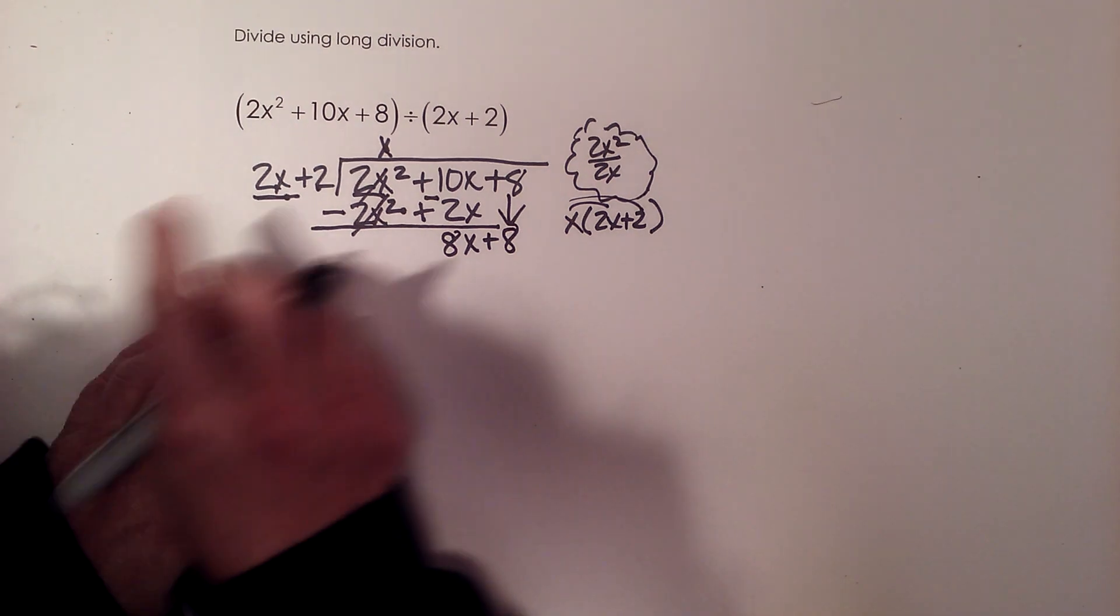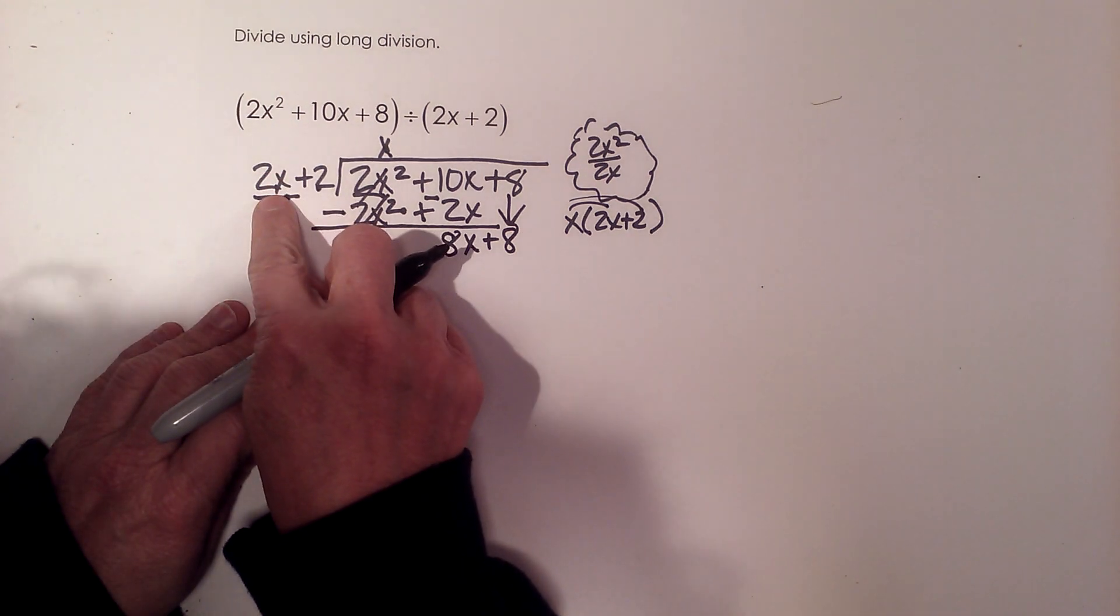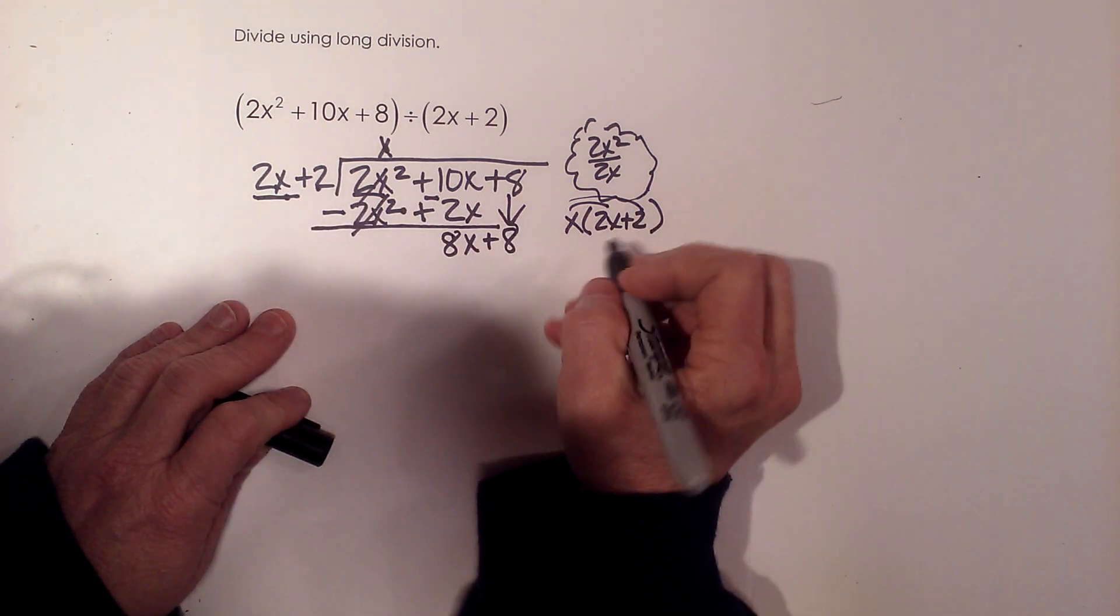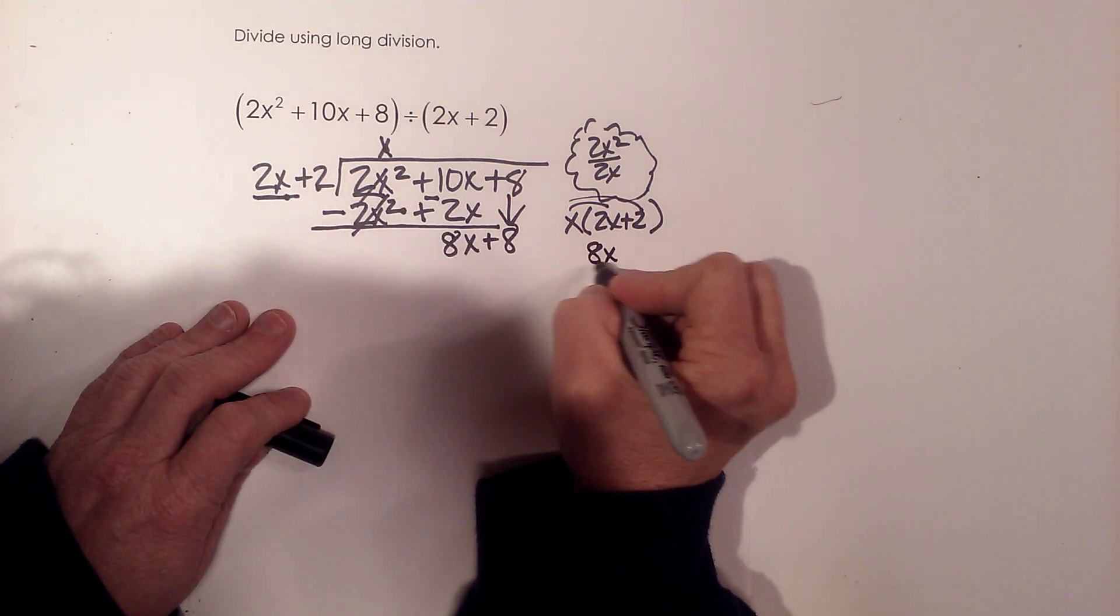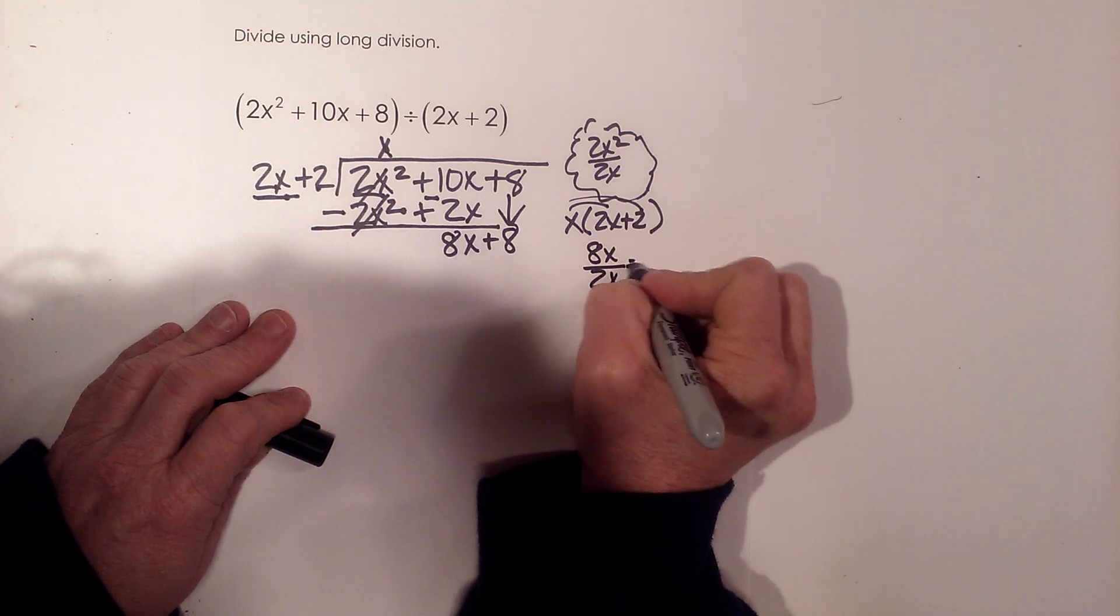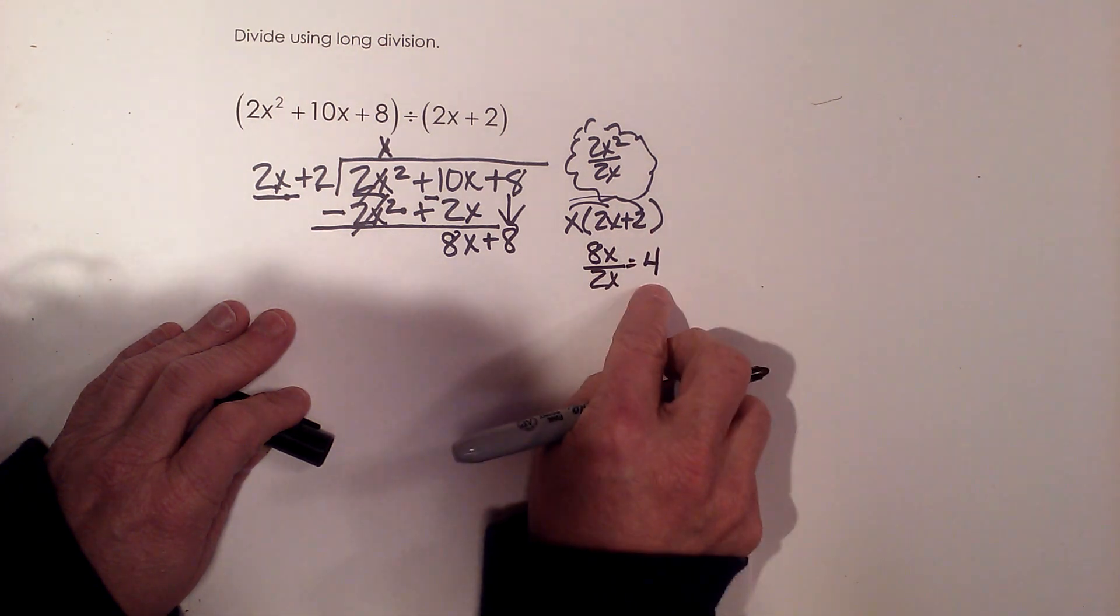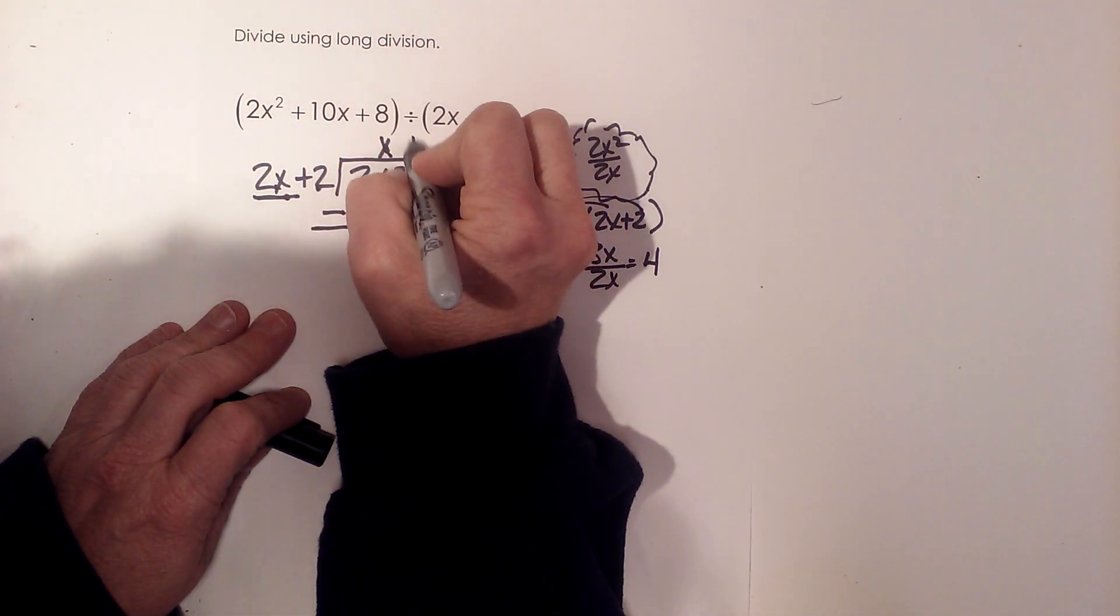We're going to repeat those steps. We're going to ask ourselves, what do we multiply 2x by to get 8x? In other words, 8x divided by 2x. What does that give us? That gives us 4. So that's what I'm going to write up here, a positive 4.